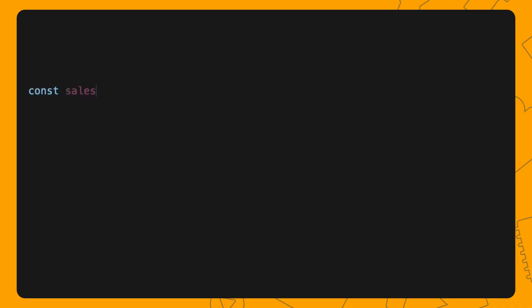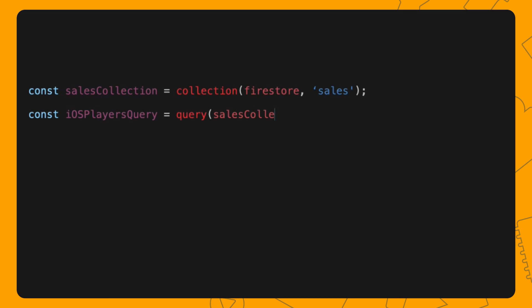The sum and average operators can also be used in conjunction with other operators to create more complex queries, where you can filter, group, and other data based on values stored in the document fields. Let's see an example of that. Suppose you want to find out the sum of all items purchased by players on iOS. To do this, you need to create a query. Let's call it iOSPlayersQuery. This query requires two parameters, the sales collection and the filter you want to apply. In this case, use WHERE to filter all documents where the field platform has the value iOS.